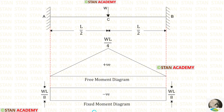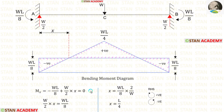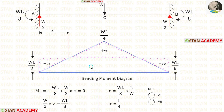Now we are going to draw the bending moment diagram. For that, we have to combine the free moment diagram and the fixed moment diagram. You can see that I have combined both of them. Wherever they are acting alone without overlapping each other, we mark the signs. Wherever they are acting together, we just keep the space empty.